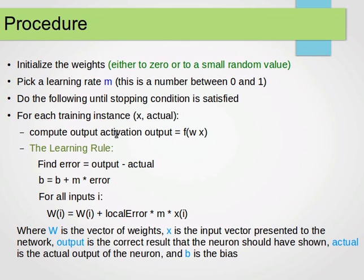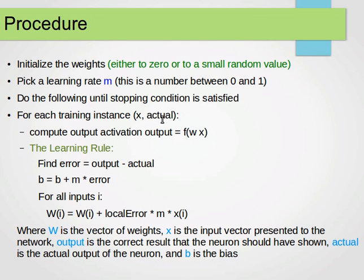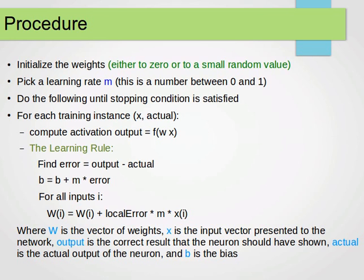So what we do is, we go through each training instance, so we go through them one by one, and the instance now is a vector of inputs and the class. So the actual means the actual class of that instance, x here is a vector of the inputs, of the features. We compute the output, the activation output, the activation output is the predicted output now, and the predicted output now will be a function, the weighted sum of all the inputs with the bias now.